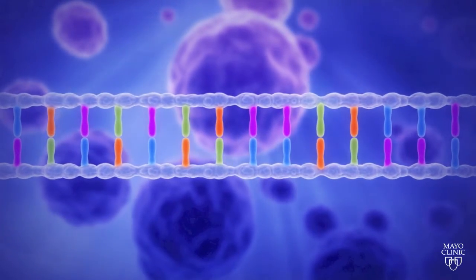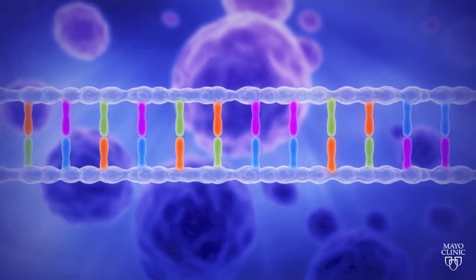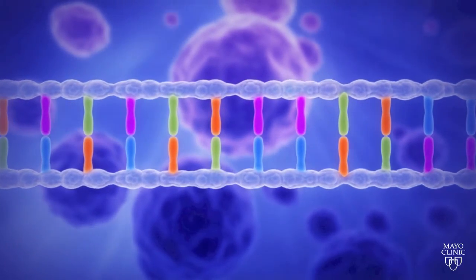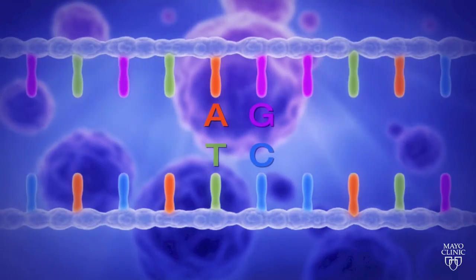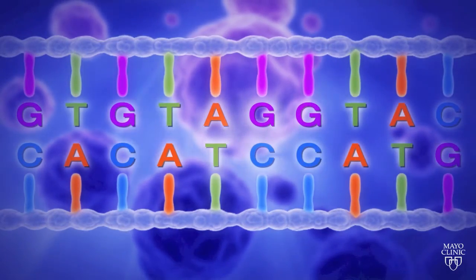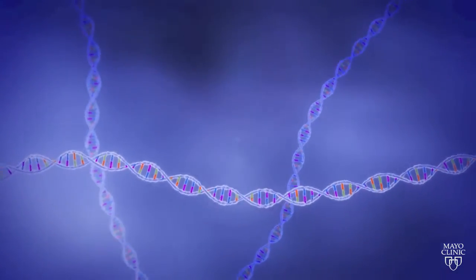The blueprint is comprised of paired chemical letters called bases. These base letters are A, T, C, and G. To read the letters in the genetic sequence, high frequency sound waves break apart the DNA into smaller pieces.